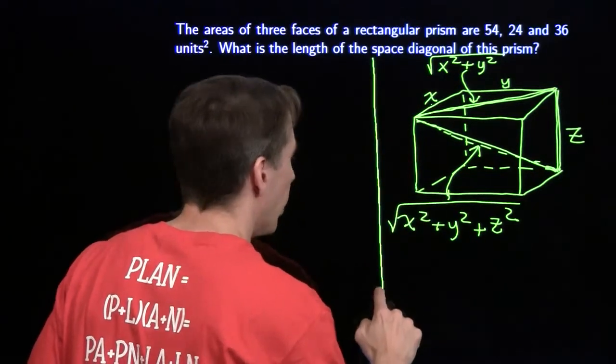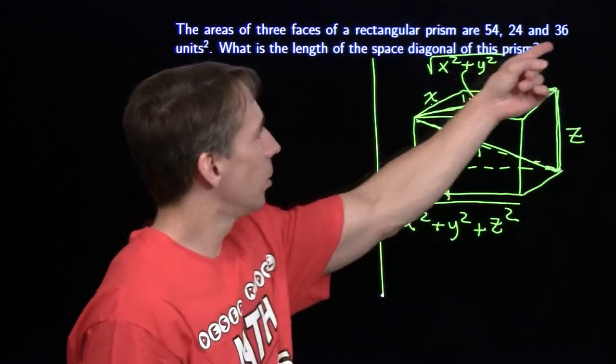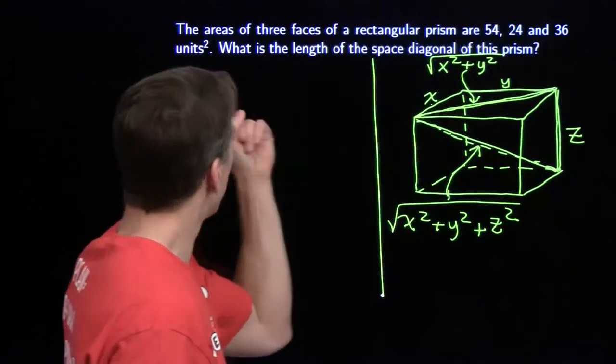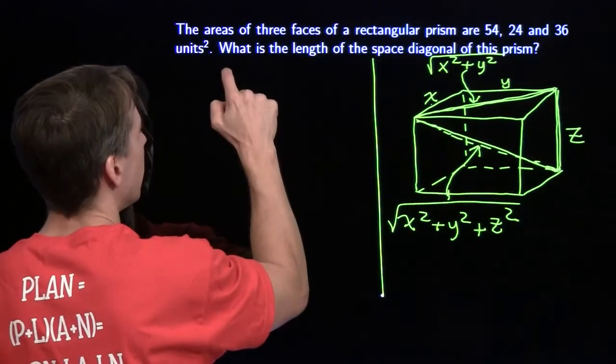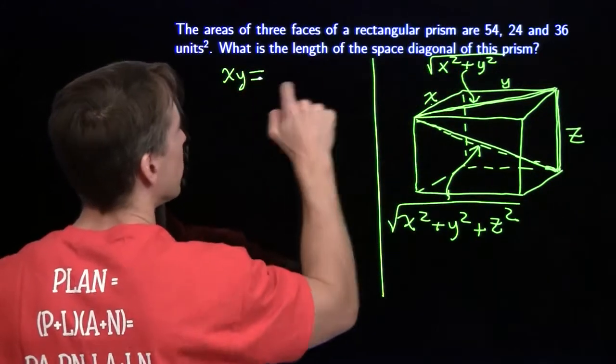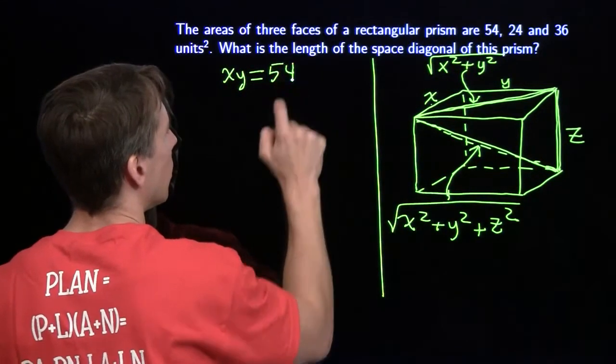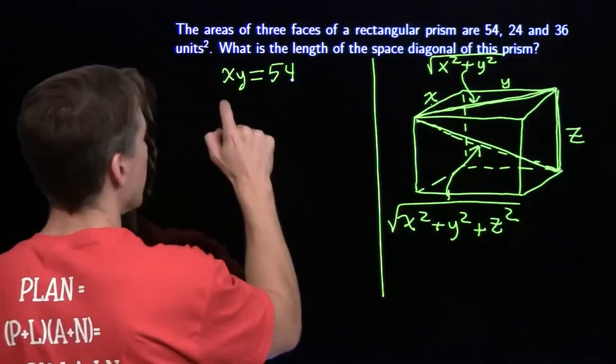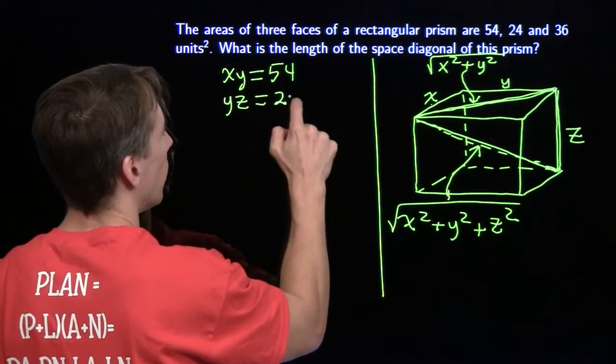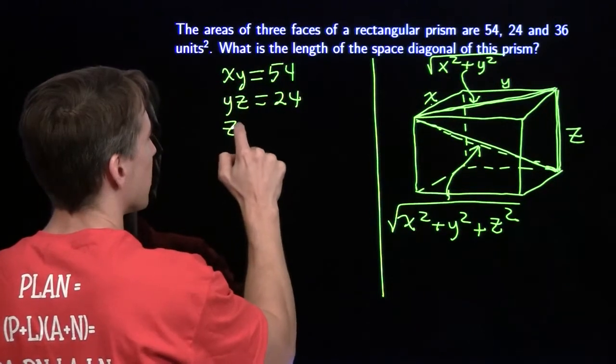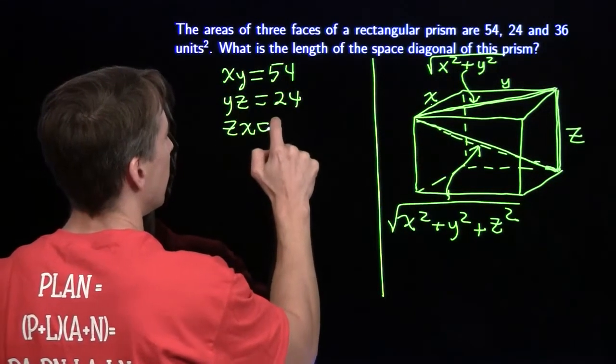I'm going to draw a line here. We're going to try to figure out what x, y, and z are. We can build some equations from the areas of the faces here. x times y is 54, y times z is 24, and z times x is 36.